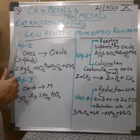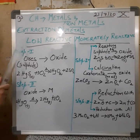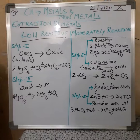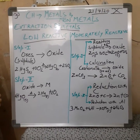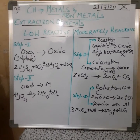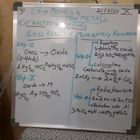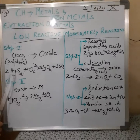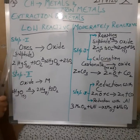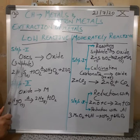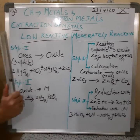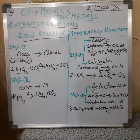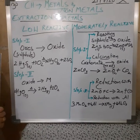Let us have a brief recap of how these metals are extracted. The low reactivity series metals are extracted in two steps. A very common example here is mercury, which is obtained from the ore called cinnabar — a sulphide ore. Step one is converting the ore, preferably the sulphide ore, to oxide. The method applied is heating in the presence of excess air.